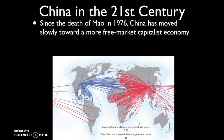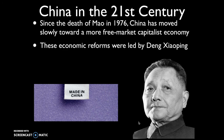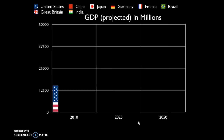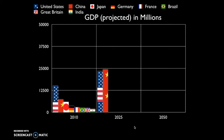Despite China still being communist with only one political party — the Chinese Communist Party — these economic reforms were led by Deng Xiaoping, the leader following Mao, and have been wildly successful. Think of all the goods produced in China today. GDP graphs show that in 2010 the U.S. and China were the top two economies, with projections for 2025 showing China starting to surpass the United States in total gross domestic product. This doesn't account for GDP per capita, but it does suggest the Chinese economy is growing very rapidly.